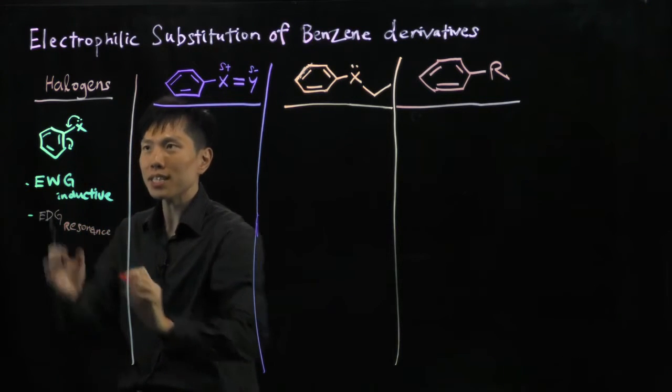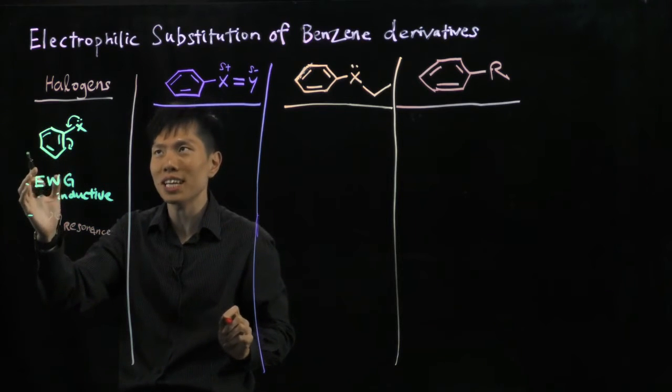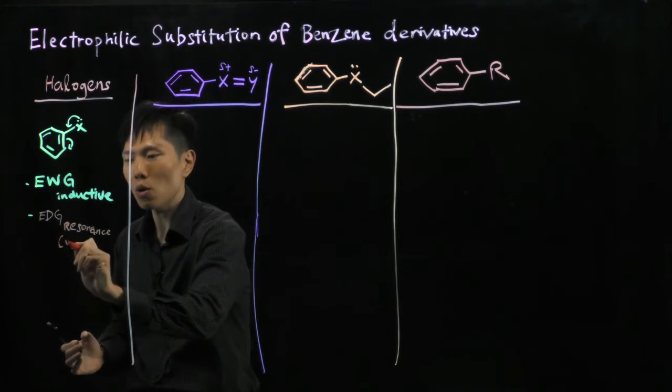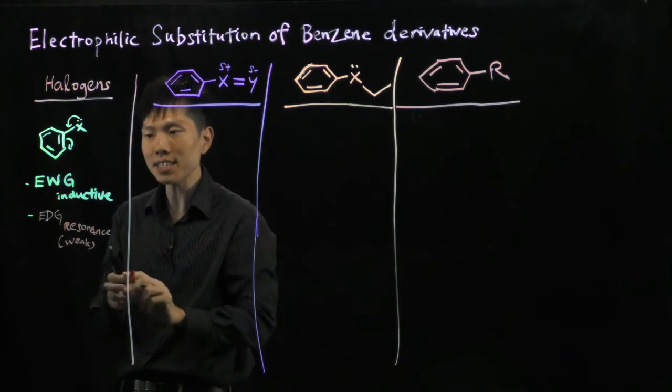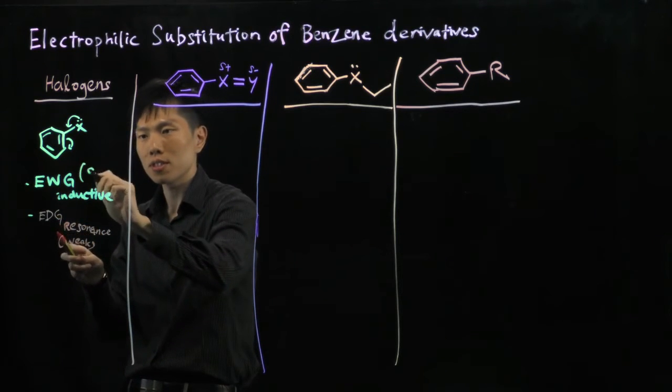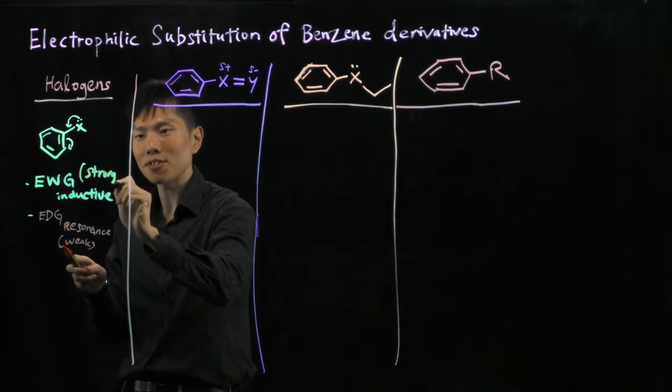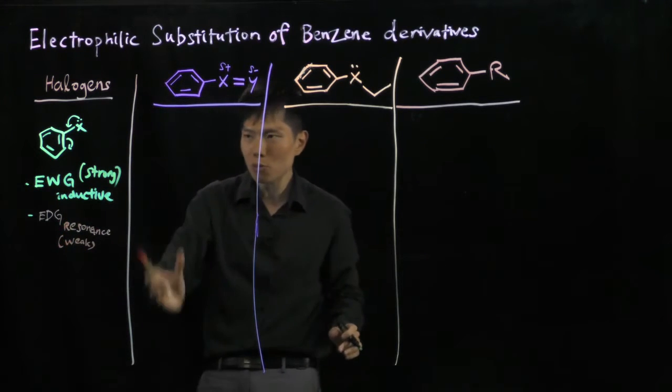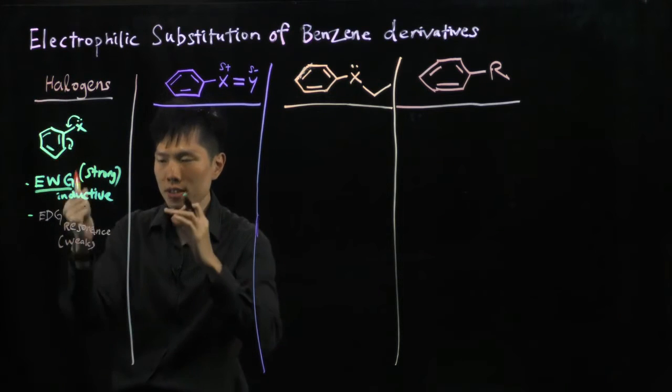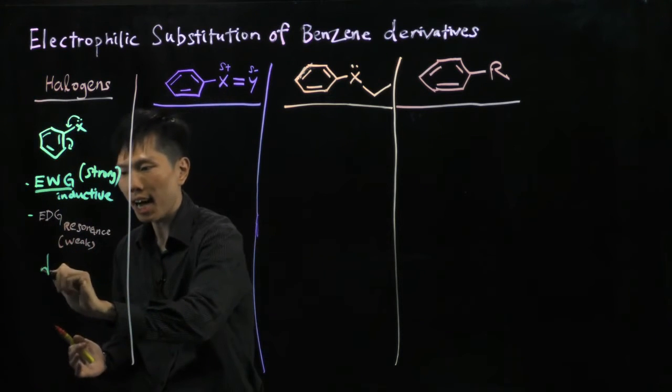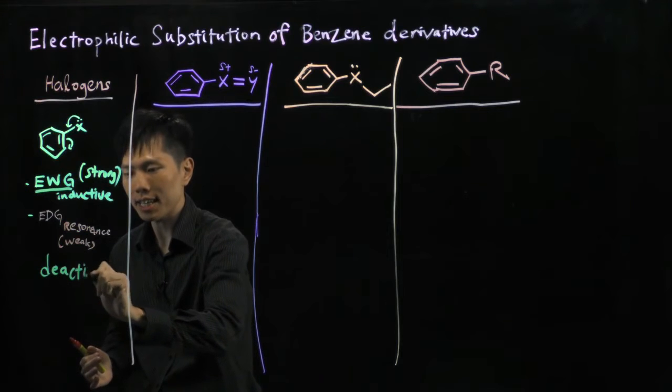However, as you know they are very stingy with electrons because they're electronegative, so this is a weak effect. In the first case, inductive is strong because they are just electronegative. So overall which one wins? The electron withdrawing factor of the halogens will win, which means that they are deactivating.